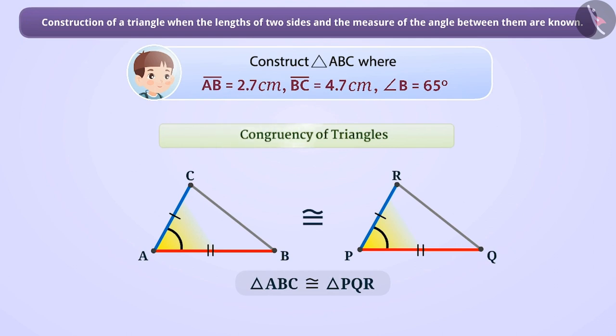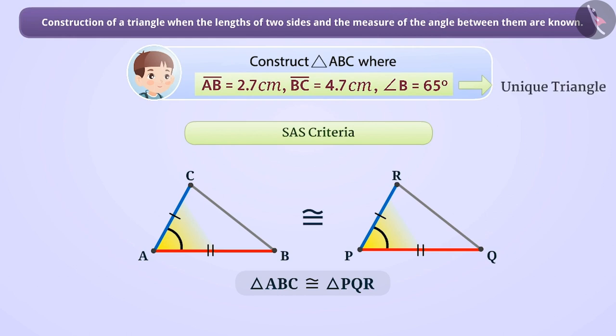This rule of congruence of triangles is called the SAS congruence criterion. This rule also informs us that if two sides and the angle included between them are given, then we can construct a unique triangle.